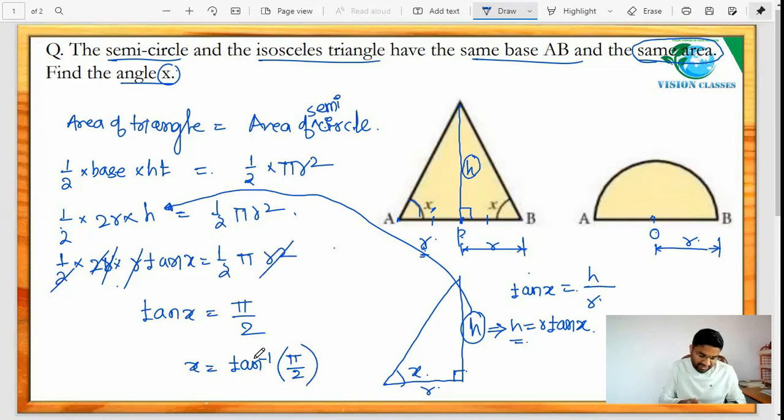...π by 2, so x I am getting 57.51 degrees. So this is how we have to find out the x, got it? That's it.